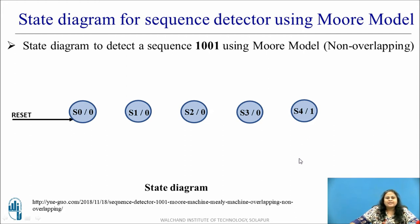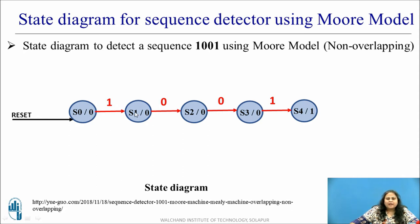We know that in Moore model the output depends only on the present state, so output is specified along with the state itself. In Moore model for a sequence detector, the output becomes high in the last state only, so for all other states the output is 0. Initially, as soon as you apply the reset the initial state is obtained — it moves into the S0 state. Whenever it is in state S0, if the input bit is 1 it moves to the next state. The next bit, if it is 0, moves to the next state again, and so on until the final bit moves to the last state. S0 is waiting for the first bit, S1 for the second bit, S2 for the third bit, and once all bits are received in S4 the output becomes 1.